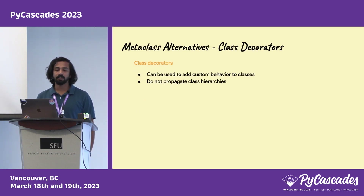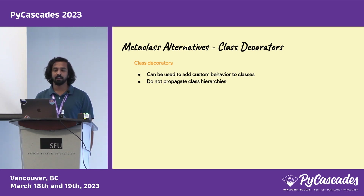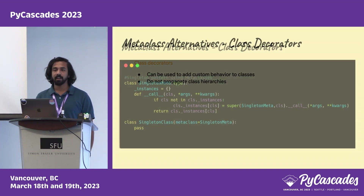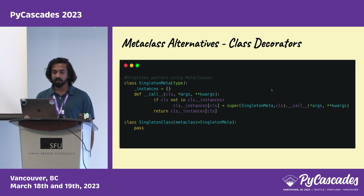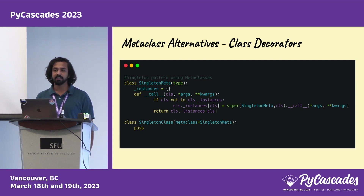Looking at alternatives to metaclasses: class decorators can be used similarly but their usage does not propagate through class hierarchies, so decorators must be repeated on child classes. We saw a singleton pattern using class decorators earlier; here is the same implementation using metaclasses. In the metaclass, we store the __instance variable, and similarly track whether the instance is already present — returning it if so, or creating a new one otherwise.